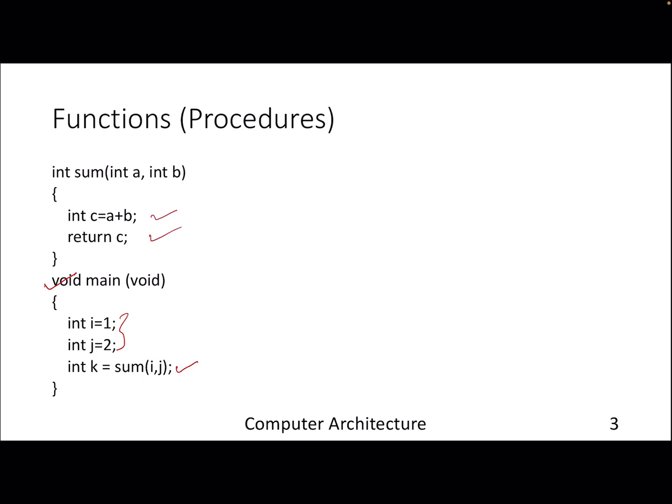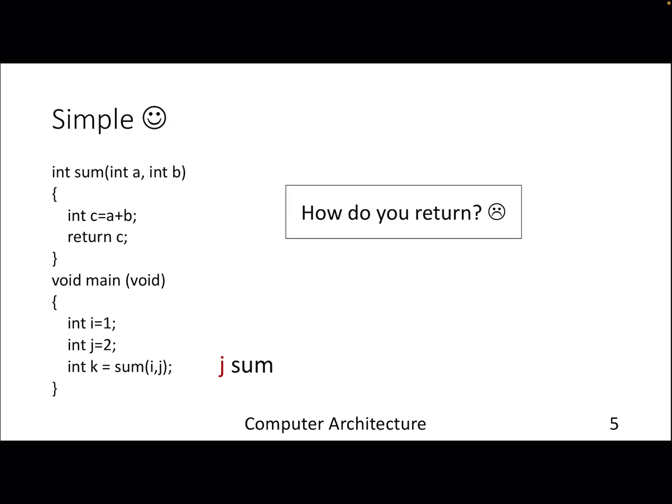If we have to convert this code into MIPS assembly, the first thing that comes to our mind is it's very simple. We know what to do here and here. At this moment we need to jump to this function where the function is sum. Something like this will just do our job. Pretty simple.